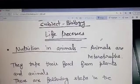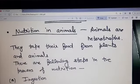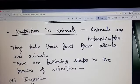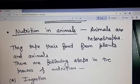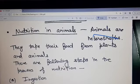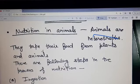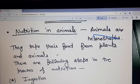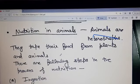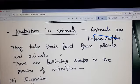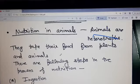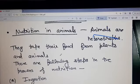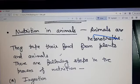Next, our topic is Nutrition in Animals. What are the animals? Heterotrophs. They take their food from plants and animals. The animals are dependent on plants and animals.